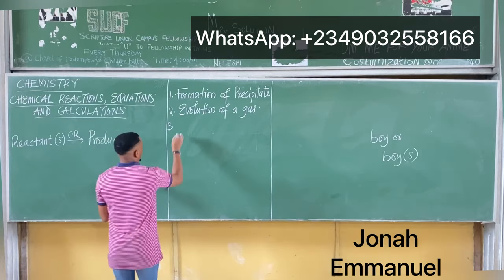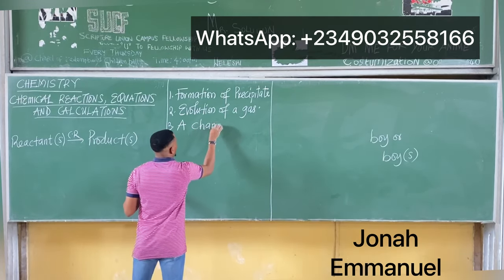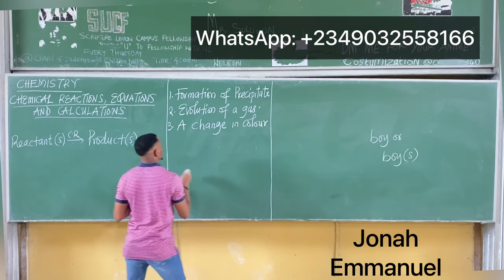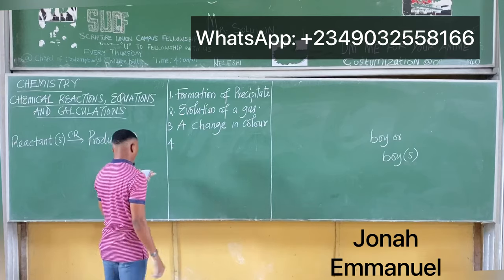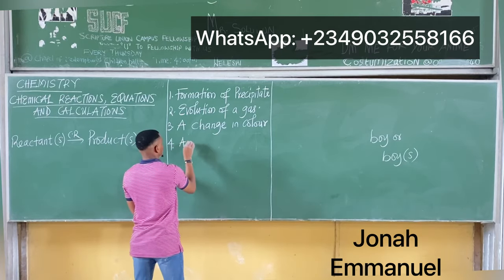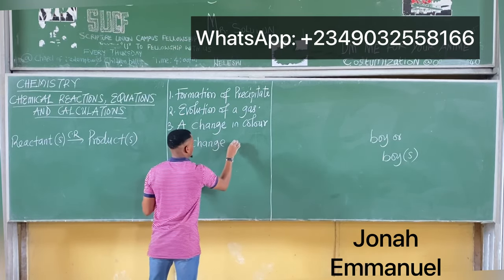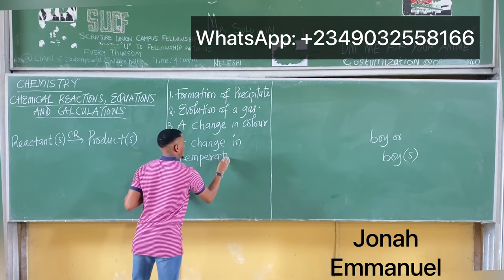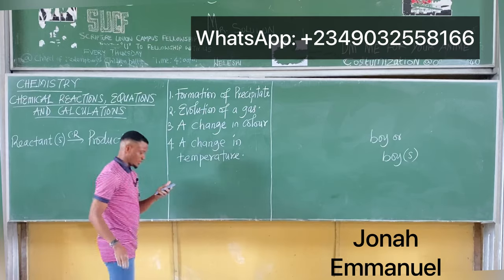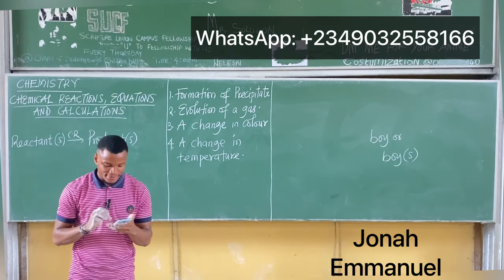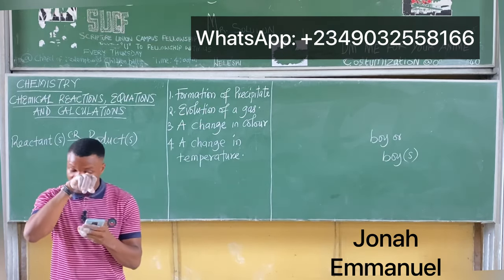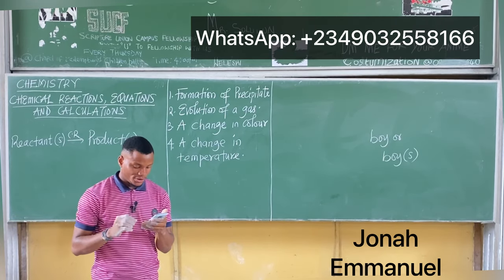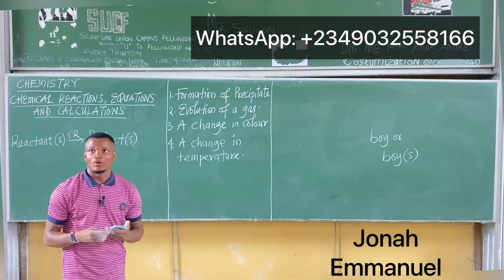Number three: a change in color. Number four: a change in temperature. These are the key pieces of evidence that prove a chemical reaction has occurred.